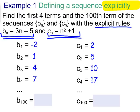With an explicit rule, which again is akin to our function notation, the benefit of it is that you can jump to any number. We can jump all the way to b subscript 100. We could just plug in 100 and get 295 for b sub 100. We could plug in 100 and get 1001 for c sub 100.